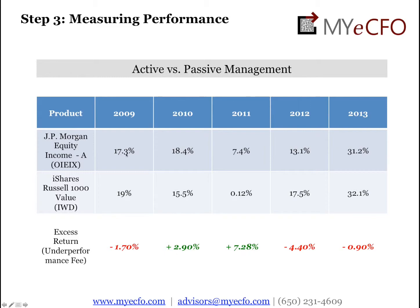In 2009, the return was 17.3%. In 2013, it was 31%. If you were an owner of JP Morgan's Equity Income Fund, you'd be pretty happy as an individual investor. You'd say, my money is making money — I'm making more than the bank, which is the typical phrase I hear from investors. They're doing a good job, they're smart people.